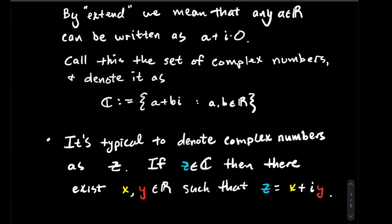If z is a complex number, then there should exist two real numbers x and y, so I'm using x and y instead of a and b, such that z equals x plus iy.